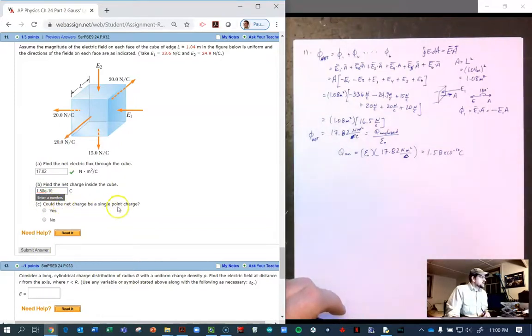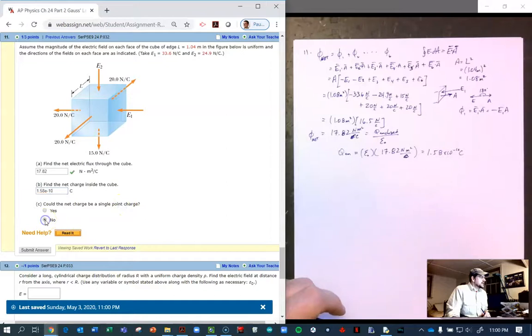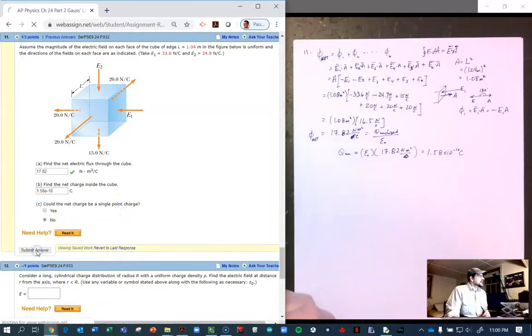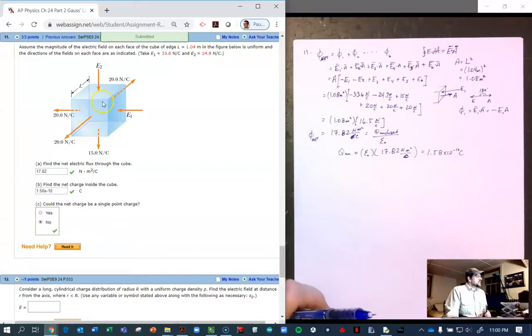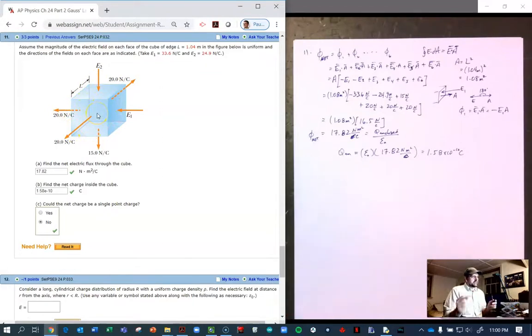And could the net charge be a single point charge? No, it cannot. And if you think about it, you know it can't be, because if it were a single point charge, then all of the electric field lines would be pointing in the same direction. They don't all have to be the same value, but they should all be pointing in the same direction - they should all be either going in or they should all be coming out. So we know it cannot be a single point charge. All right, so we're done now. Thank you.